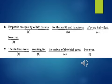Question 8: Emphasis on equality of life ensures, A, for the health and happiness, B, of every individual, C, no error, D. Question 9: The students were, A, awaiting for, B, the arrival of the chief guest, C, no error, D.